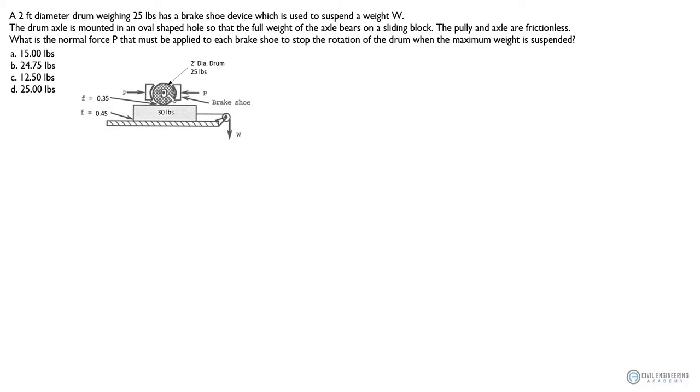So that means this block is sitting on top of this block and the full weight of the drum goes into the block. And the pulley and axle are frictionless, so there are no frictions happening in the axle. And we're going to determine what is the maximum force P that must be applied to each brake shoe to stop the rotation of the drum when the maximum weight is suspended. So you can see here, we're looking for the situation when maximum weight is happening, it's suspended. So what does that mean?